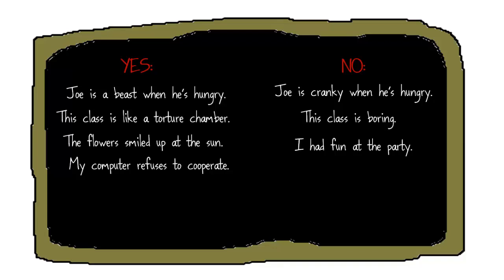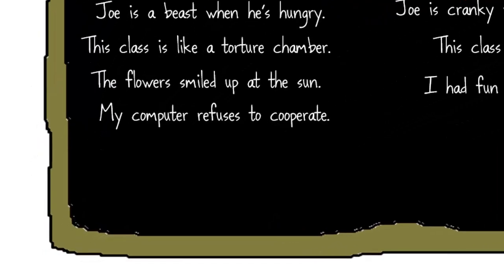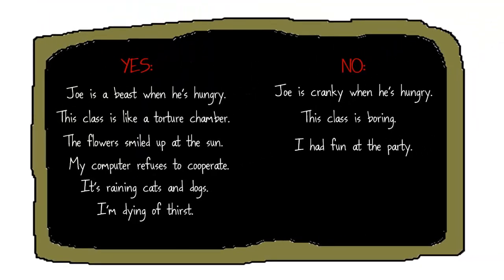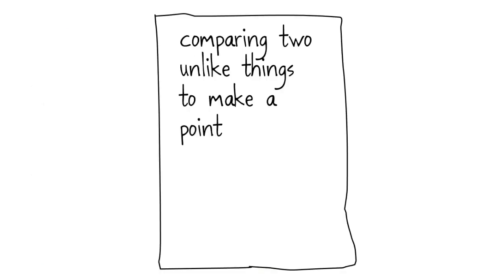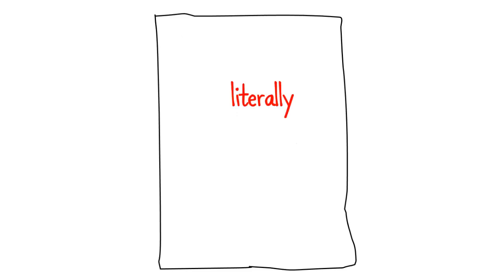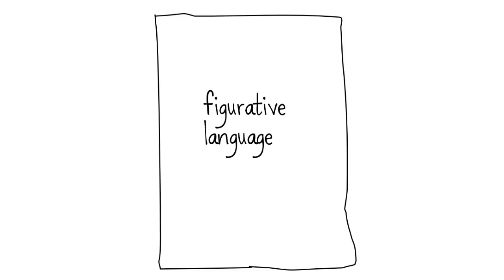Now that students are satisfied with their definition, we test it by giving them more yes examples, hopefully some that might challenge the group's definition further. So I would add: 'It's raining cats and dogs.' Here they're still sort of comparing raining to the idea of cats and dogs flying out of the sky to make a point — so this kind of fits. But then I give them: 'I'm dying of thirst.' Now we're really starting to stretch. This is an example of hyperbole — an exaggeration. After seeing two more yes examples, students revise their definition and change it to: 'saying something that isn't literally true, but gets a feeling across.' One student used the word 'literally,' which ties directly into the concept — figurative language is the opposite of literal language. At this point, I can give students the formal definition for figurative language and the terms for the examples I showed them.